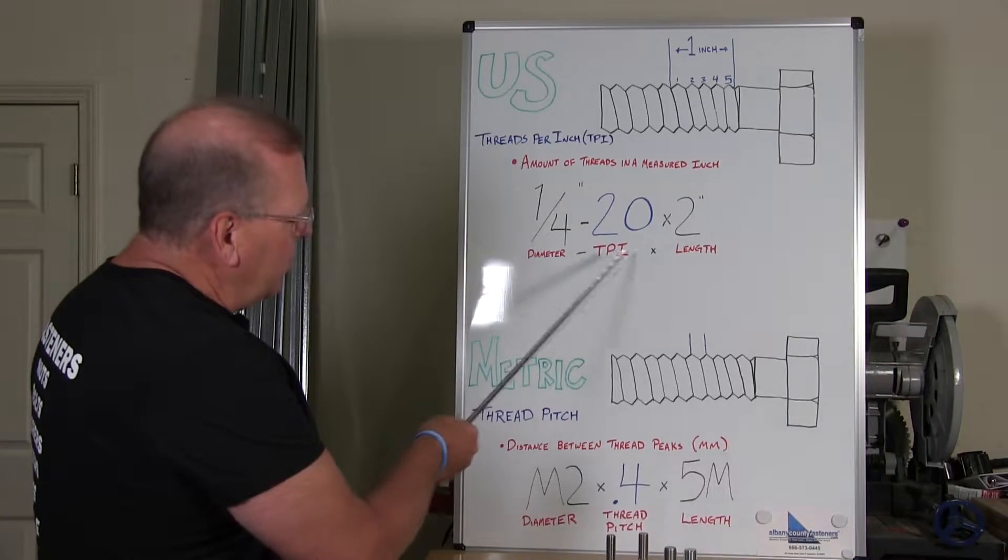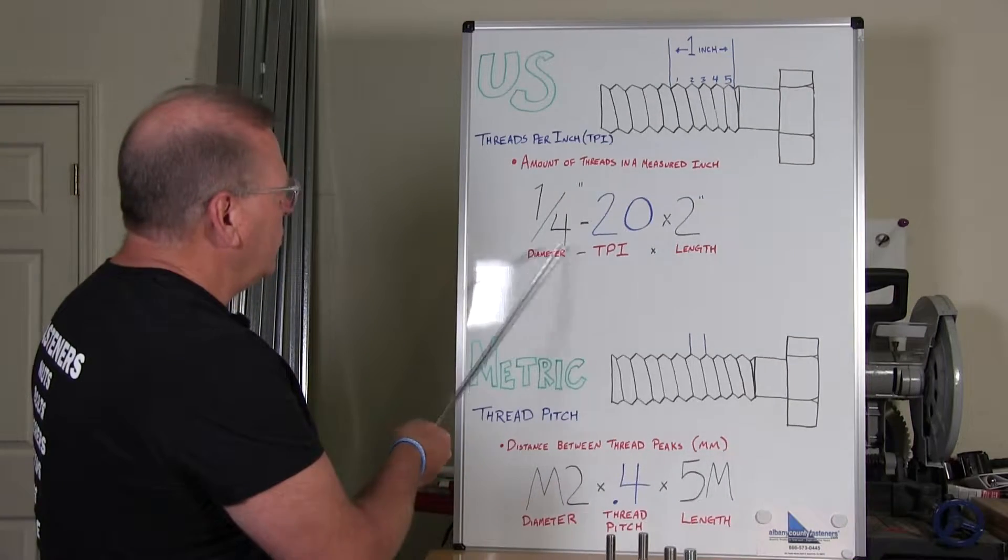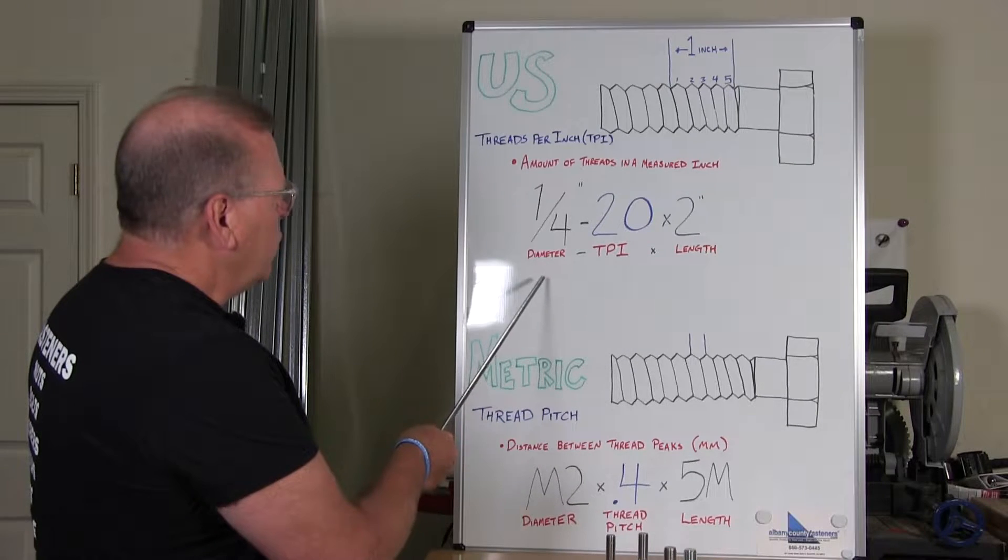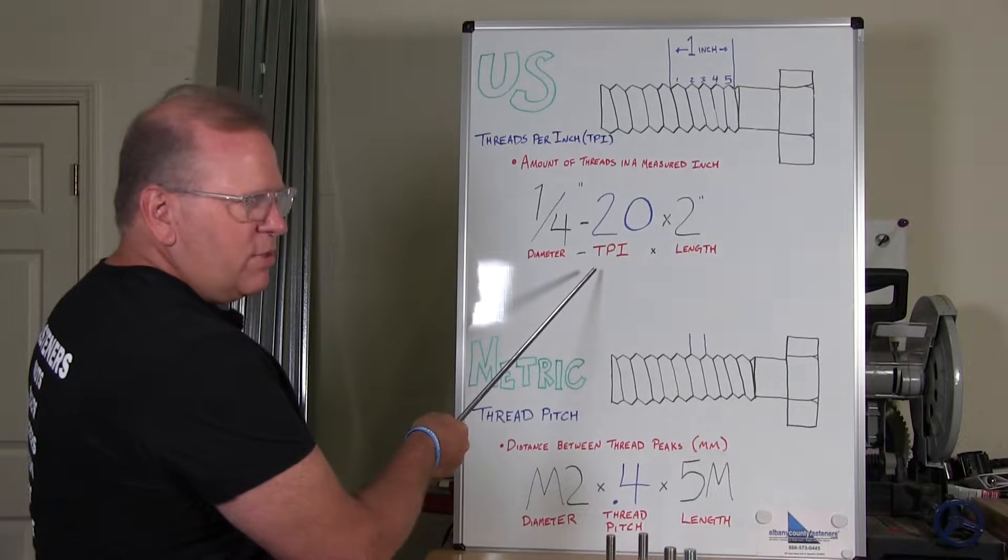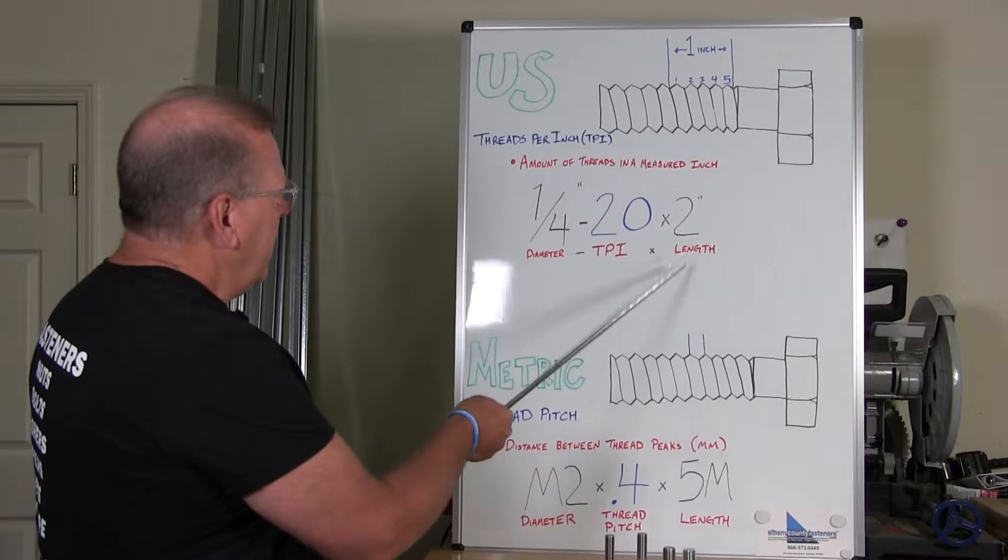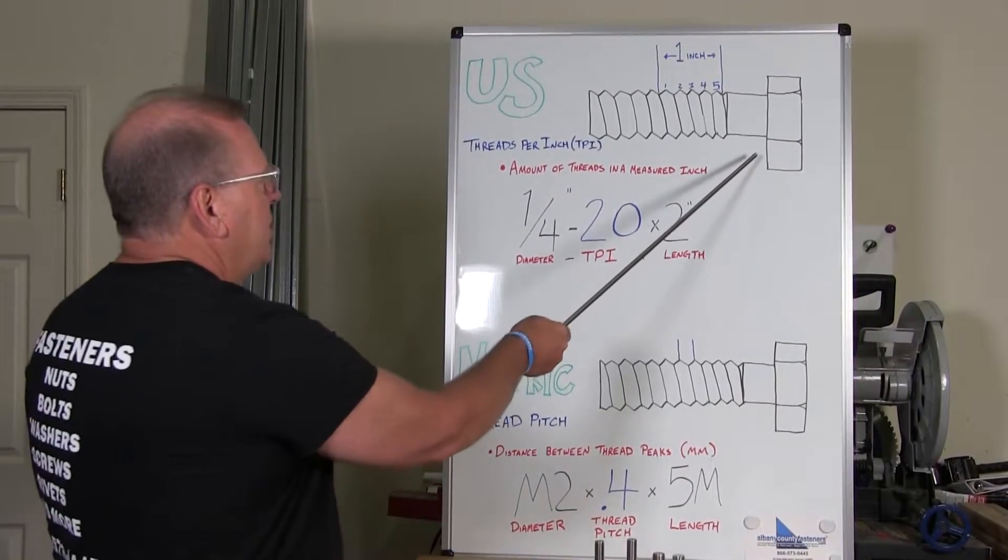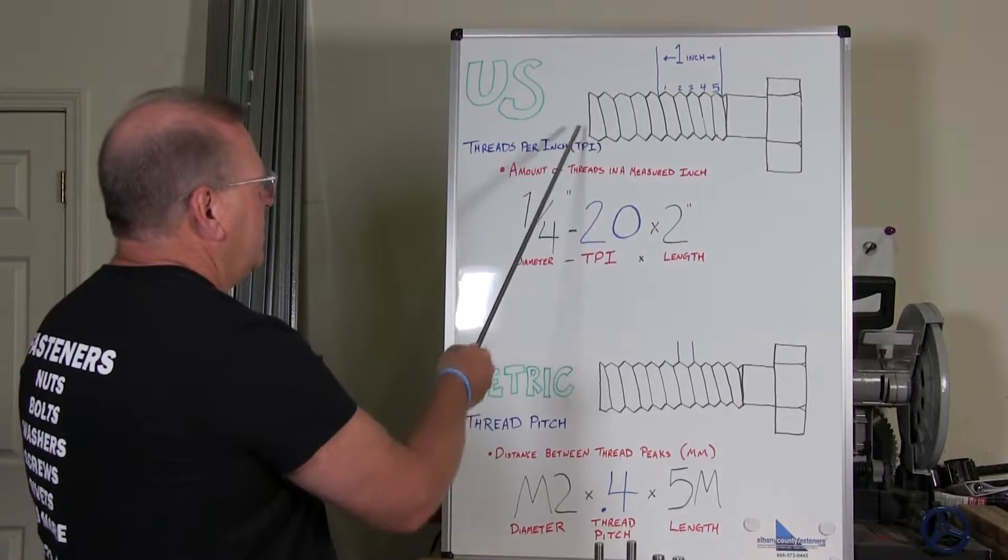As you can see here we wrote the bolt is ¼-20 by 2 inch. The quarter is the diameter. The 20 is the threads per inch and the 2 inches long is measured from under the head to the end of the bolt.